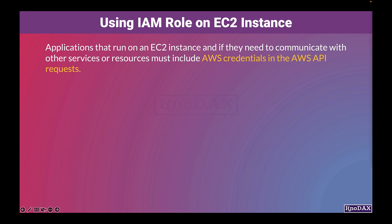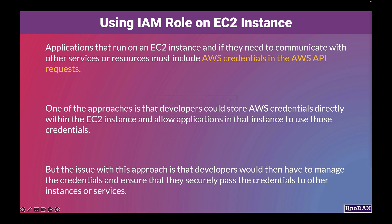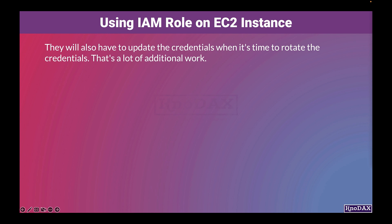Applications that run on EC2 instances, if they need to communicate with other services or resources, must include AWS credentials in the AWS API requests. One approach is that developers could store AWS credentials directly within the EC2 instance and allow applications to use those credentials. But the issue with this approach is that developers would have to manage the credentials, securely pass them to other instances or services, and update them when it's time to rotate. That's a lot of additional work.